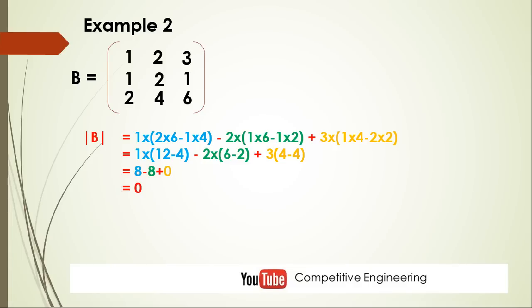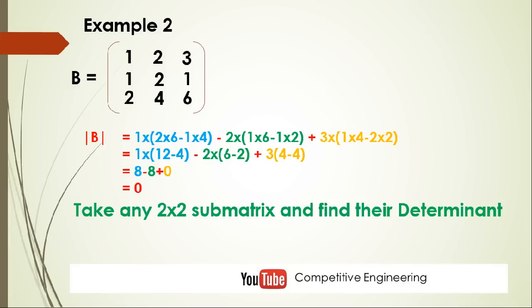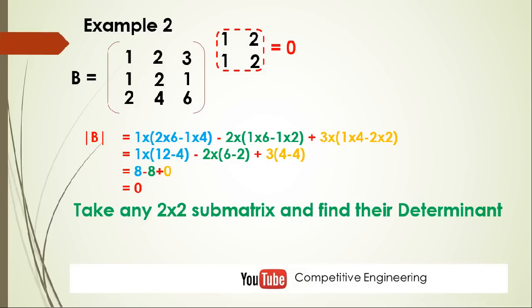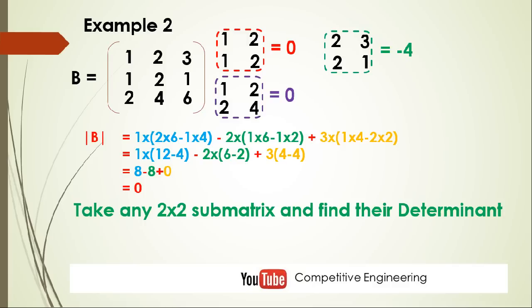So we go to step 2 and find the 2x2 sub-matrices and their determinants. A 2x2 sub-matrix is obtained by deleting one row and one column. The upper-left sub-matrix [1,2; 1,2] has determinant 0. The sub-matrix [2,3; 2,1] has determinant minus 4. The sub-matrix [1,2; 2,4] has determinant 0. The sub-matrix [2,1; 4,6] has determinant 8.